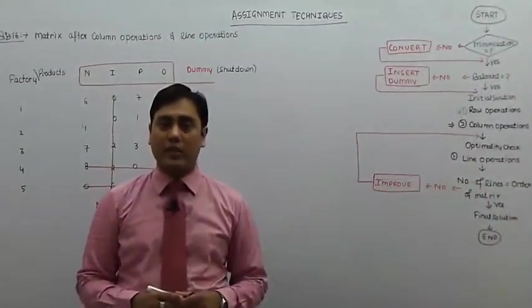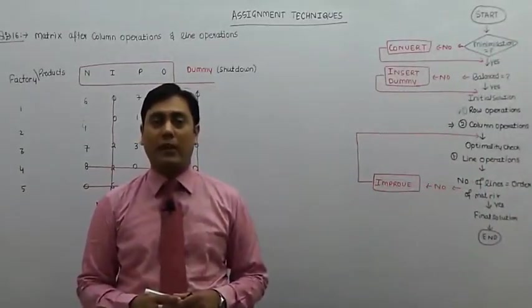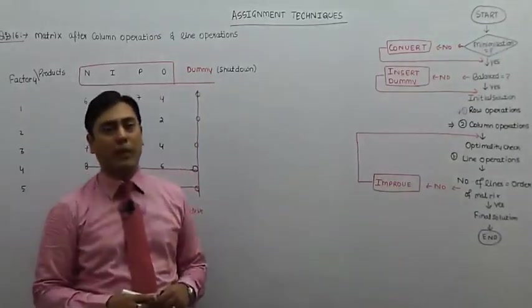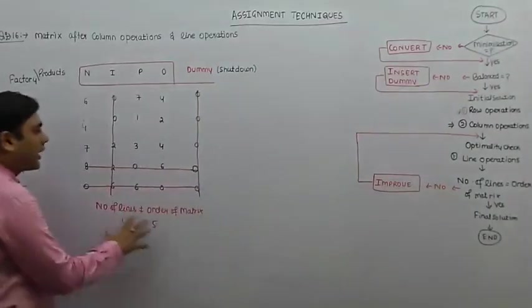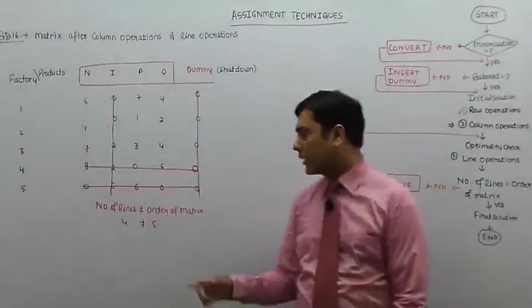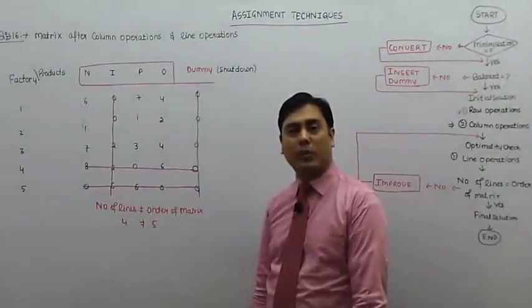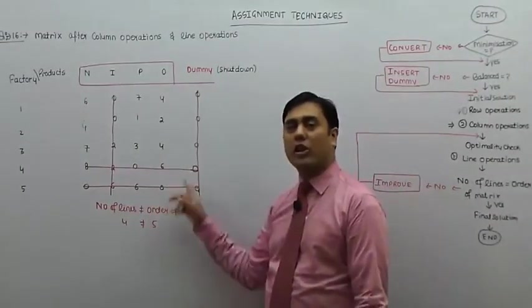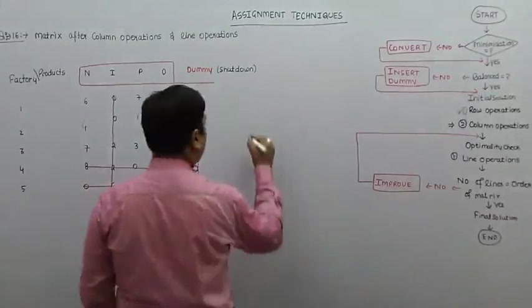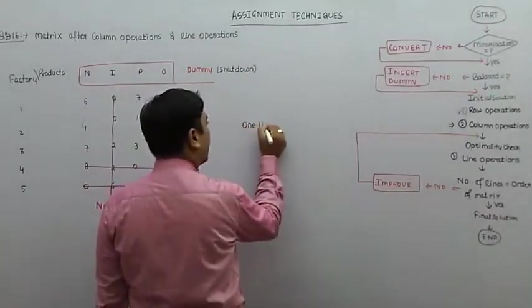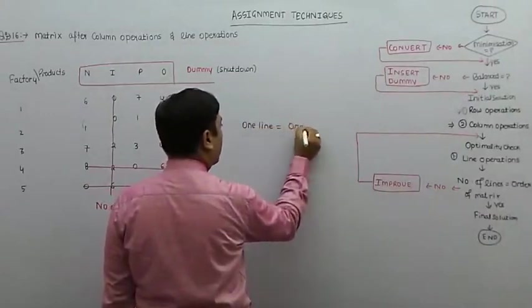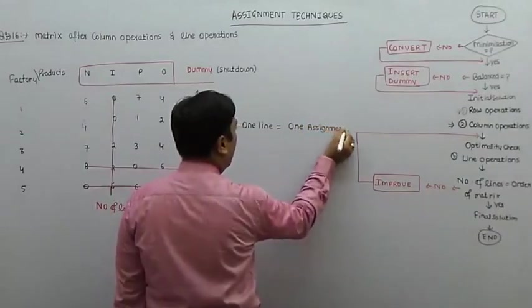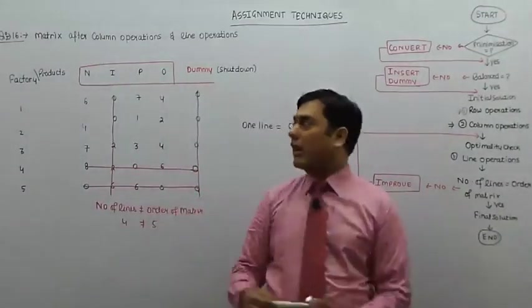Number of lines is equal to order of matrix. Now, number of lines tells us about possible assignments and order of matrix is also relevant. One line is equal to one assignment. We have a number of assignments. This is a 5 by 5 matrix.